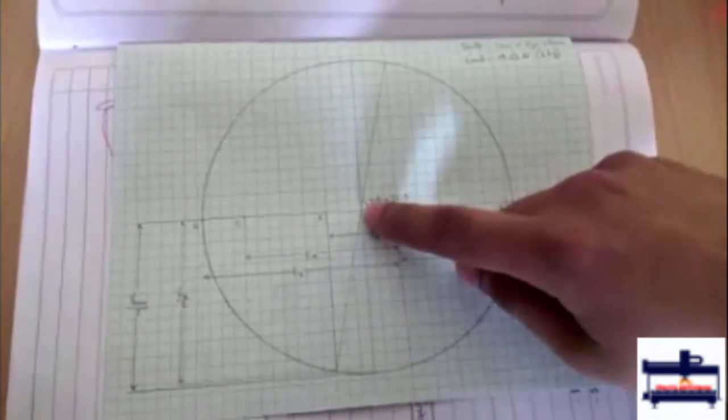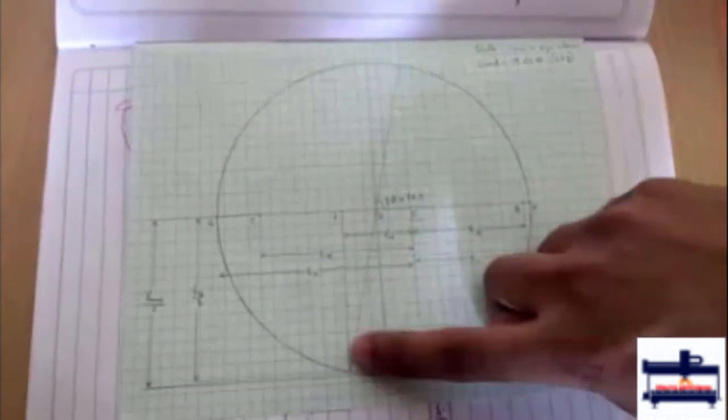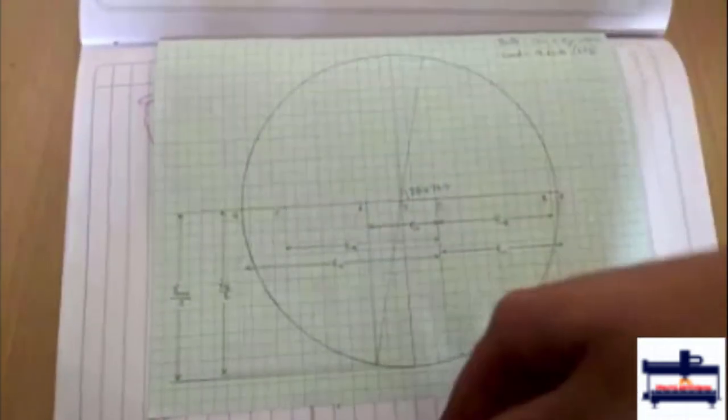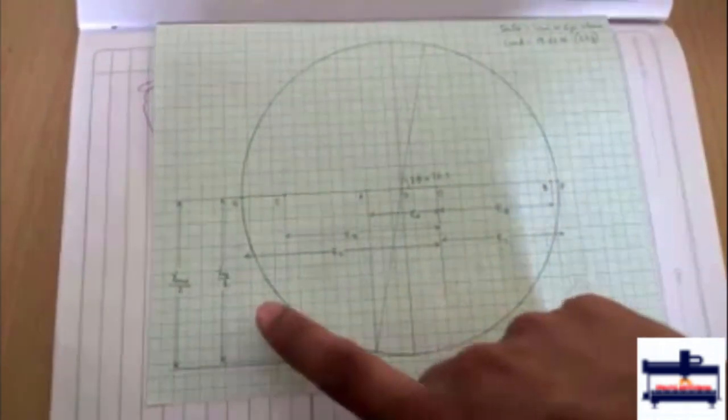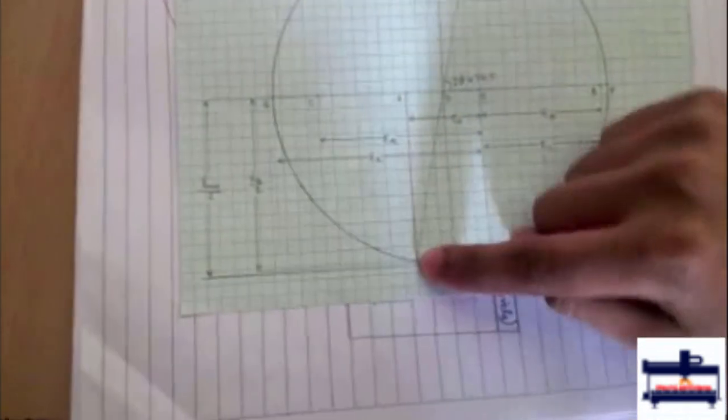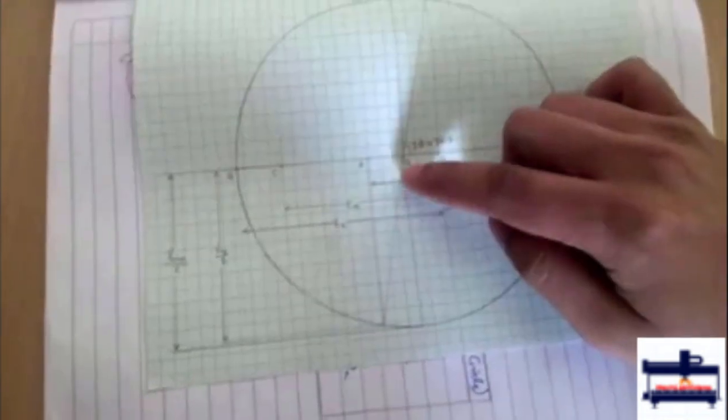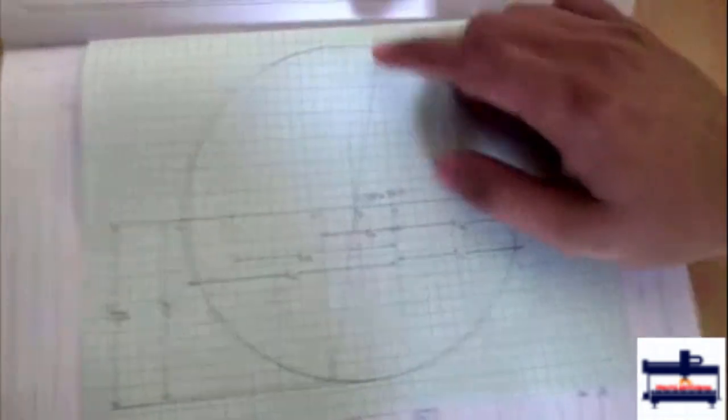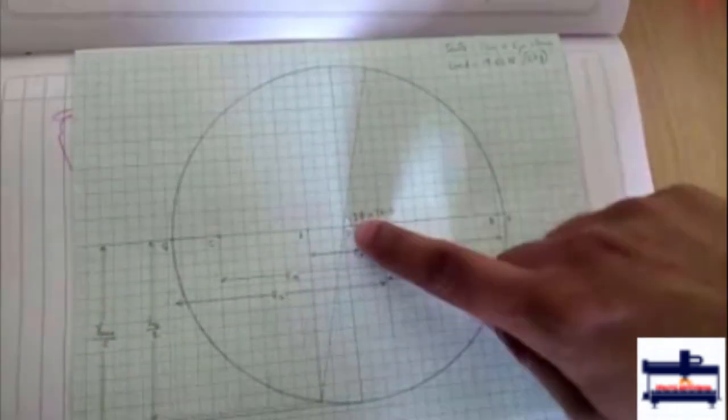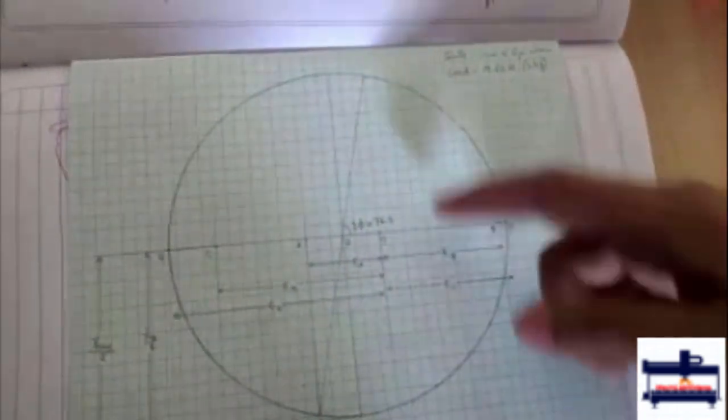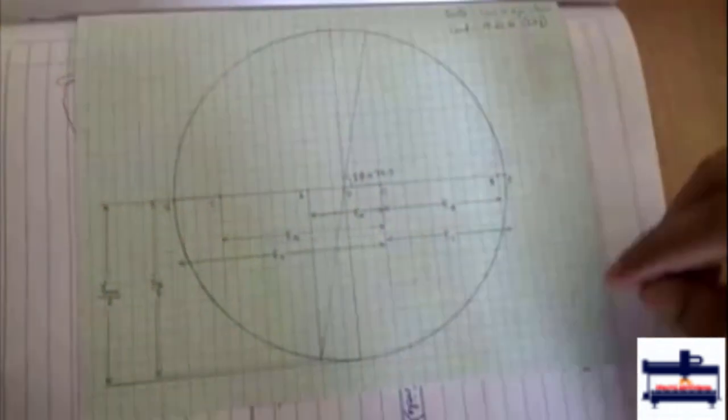After this we mark a line from point A vertically downwards which is equal to gamma xy by 2. From that line we connect it to point D and we extend it upwards to the same length so that becomes your diameter and we get the angle 2 phi from that.